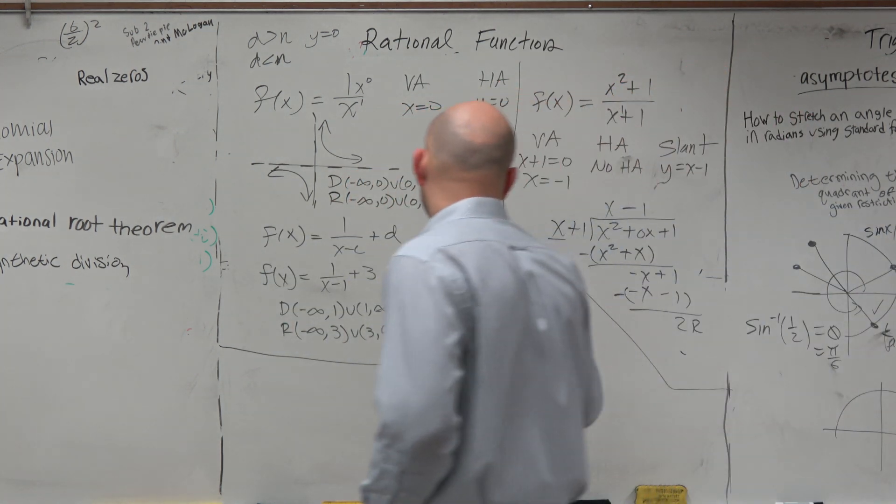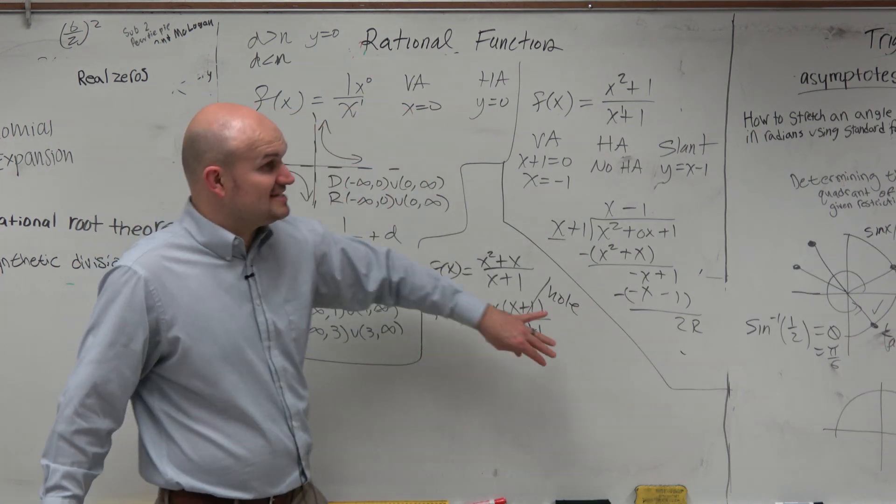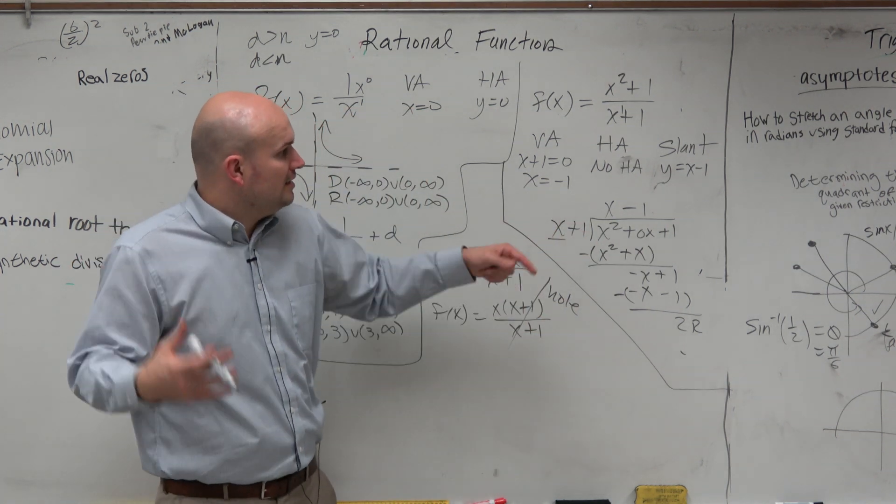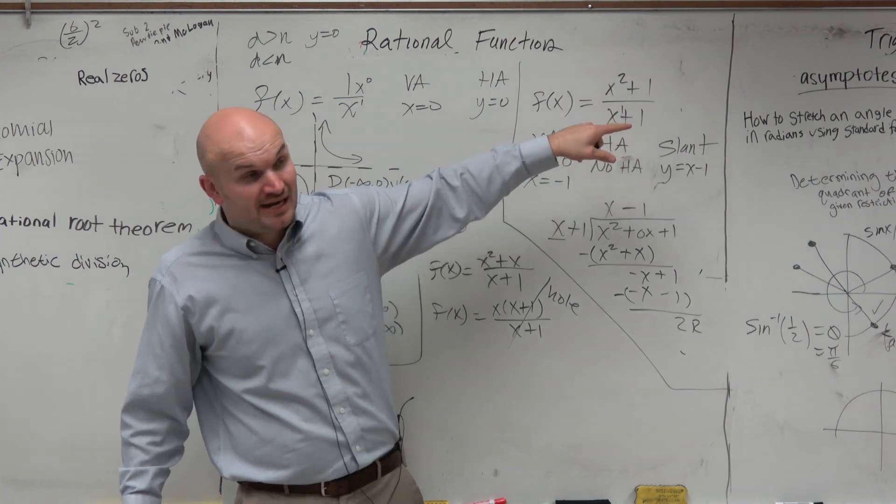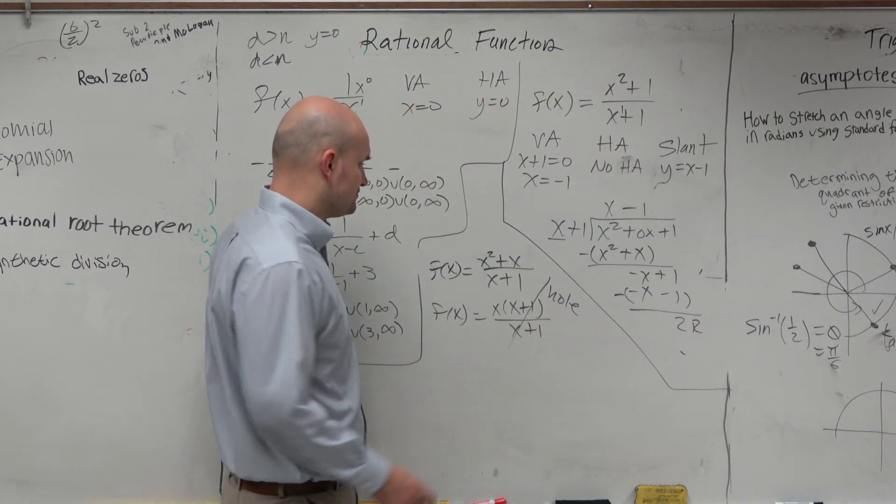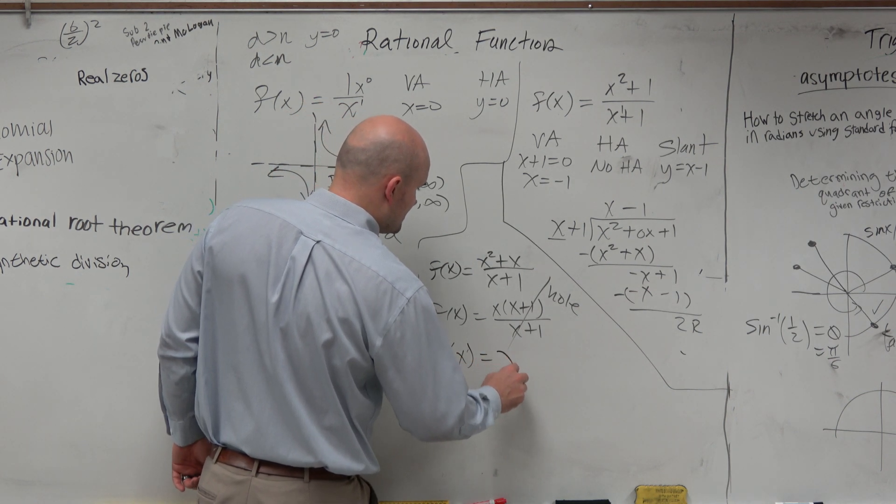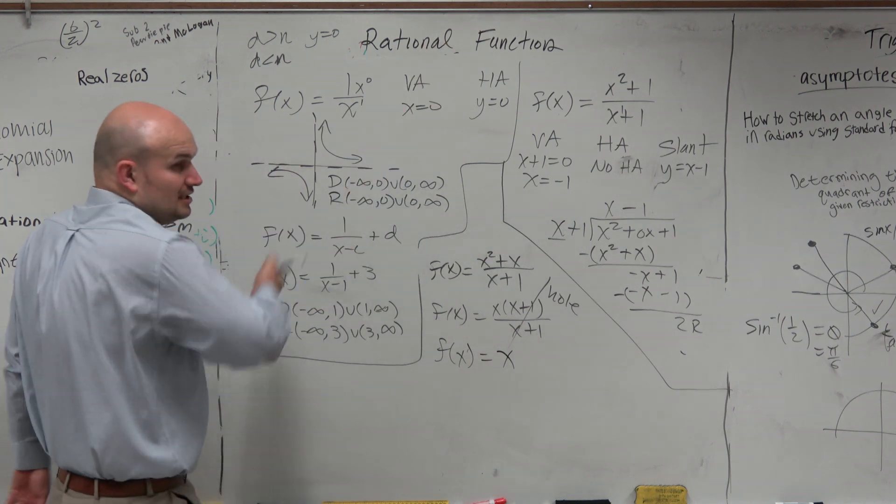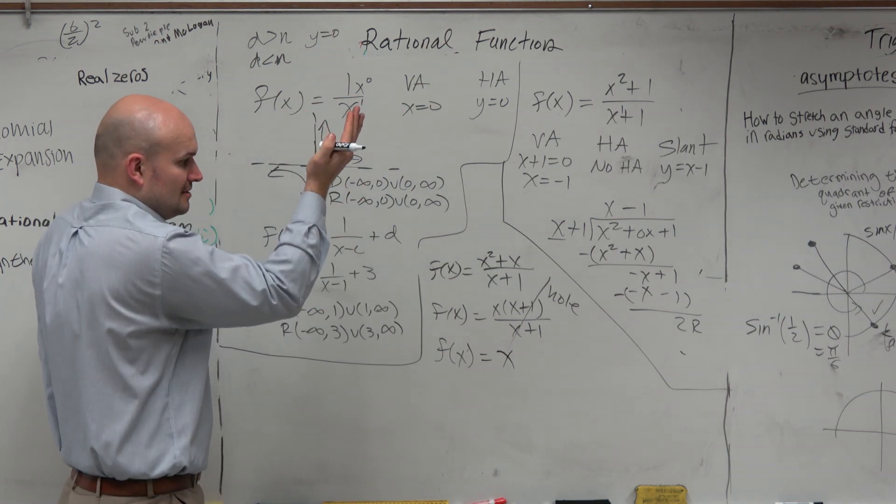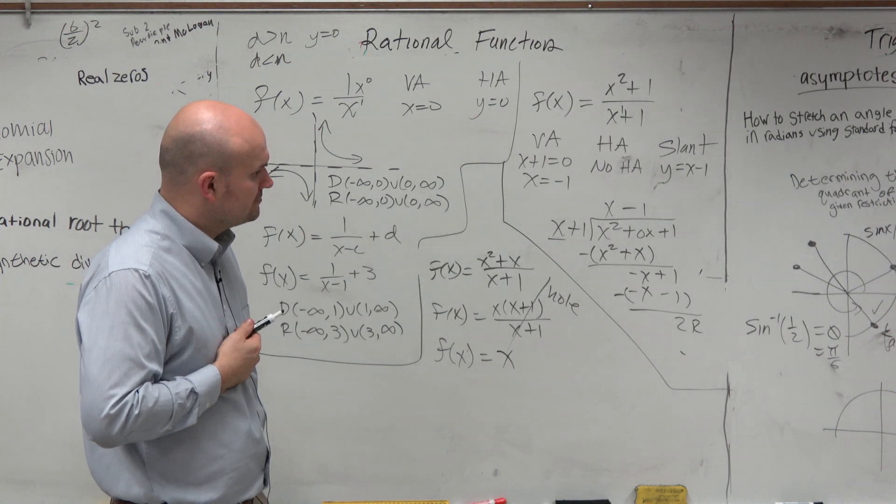A hole, right? Because when you have a discontinuity that gets divided out, that is a hole. It's removable. And when you have a discontinuity that does not get divided out, that is non-removable and called a vertical asymptote. So this equation ends up being f of x equals just x. It's literally just the line x with a hole at negative 1.